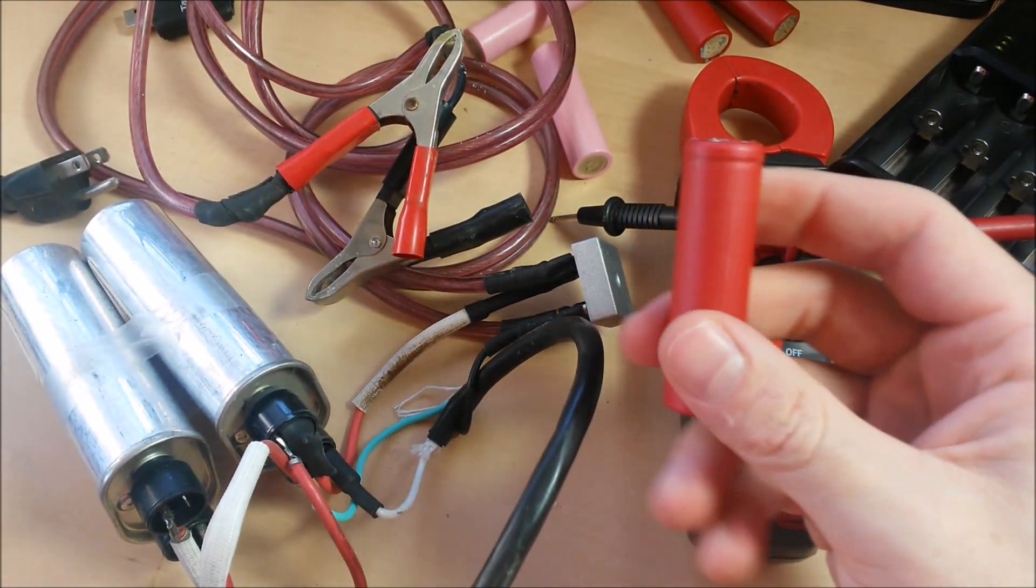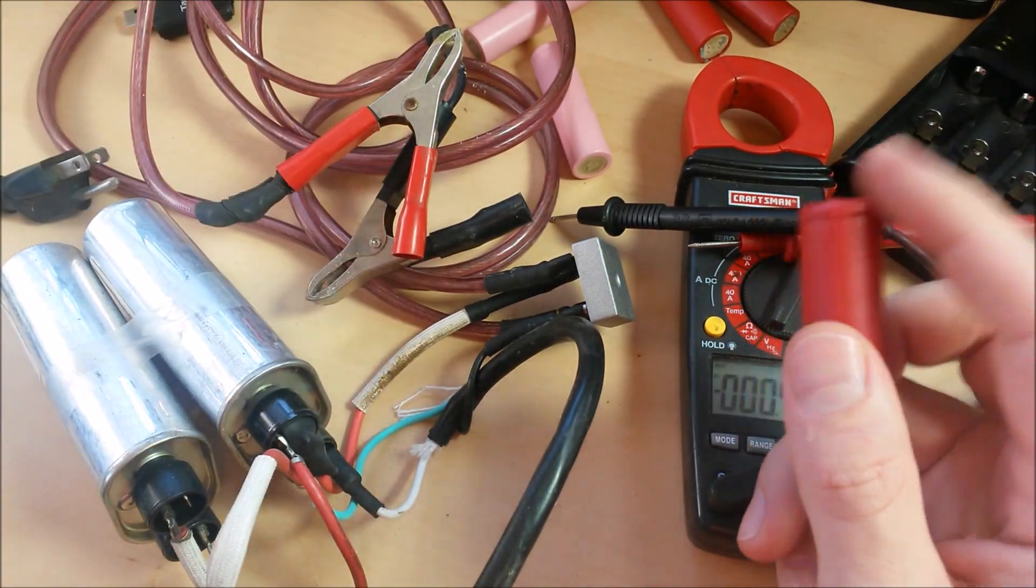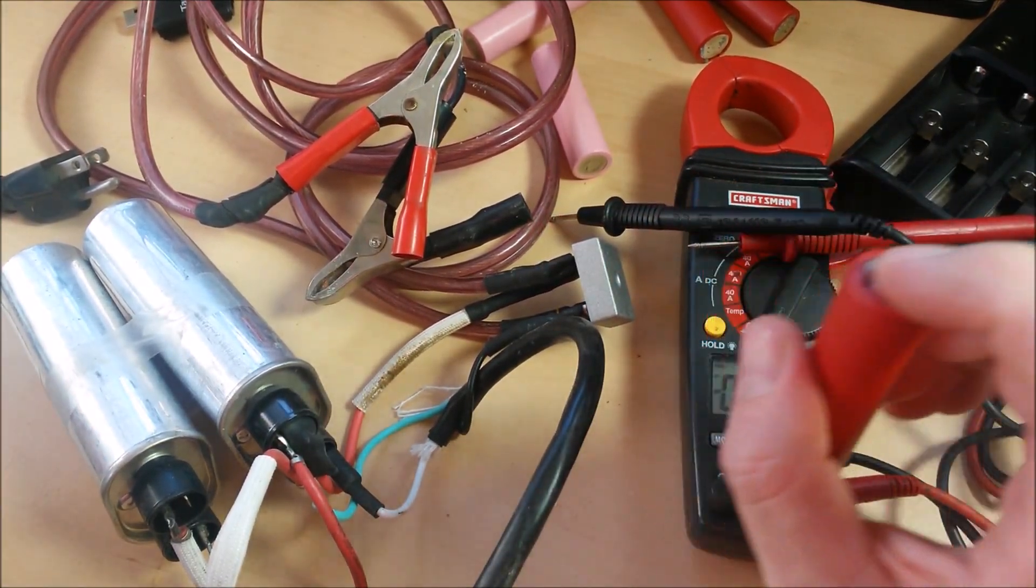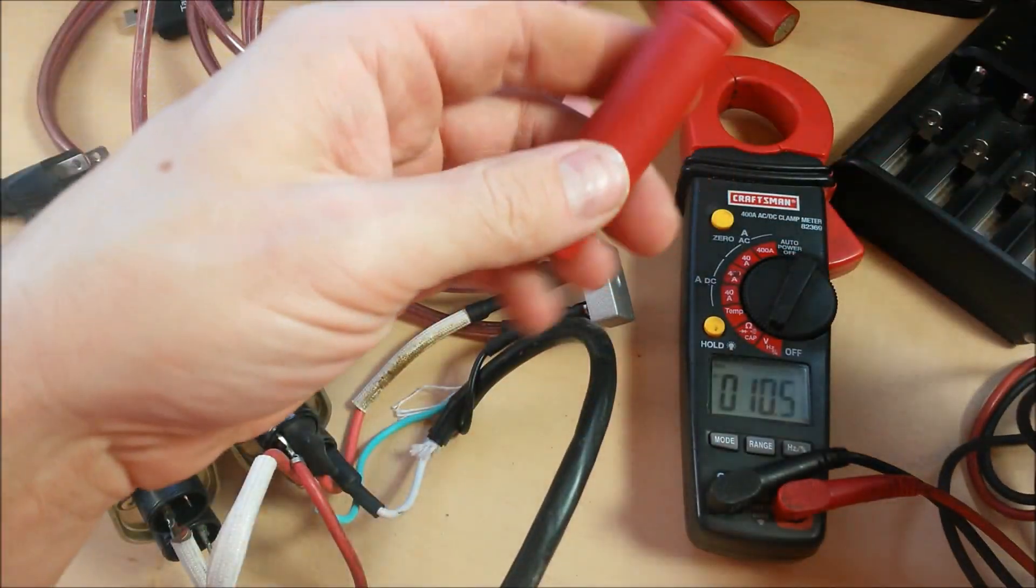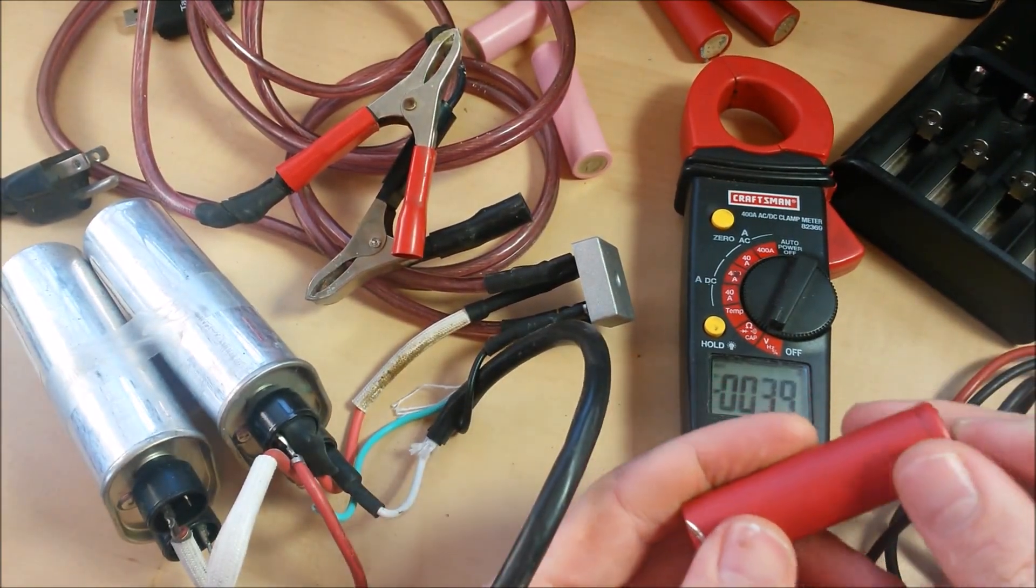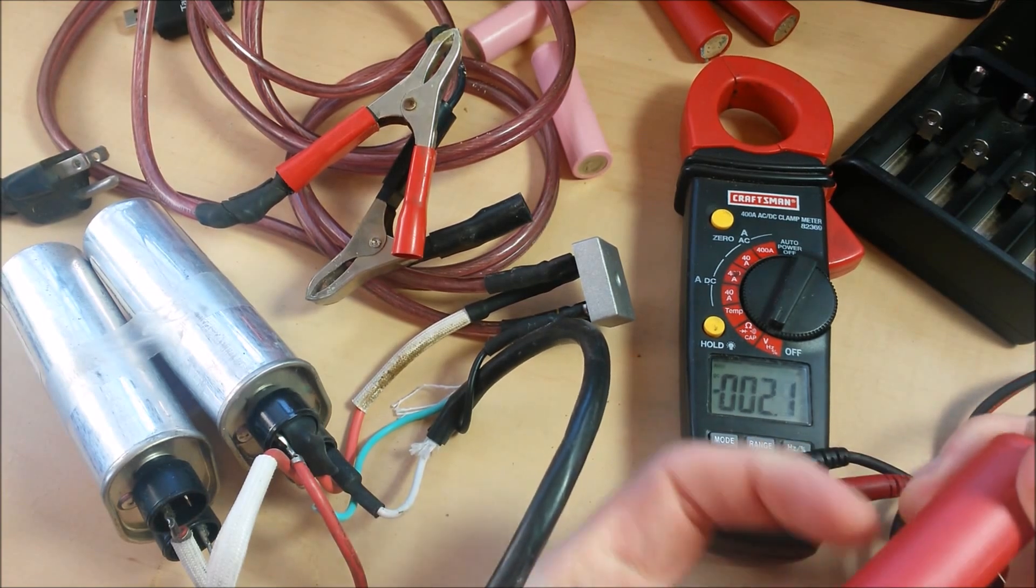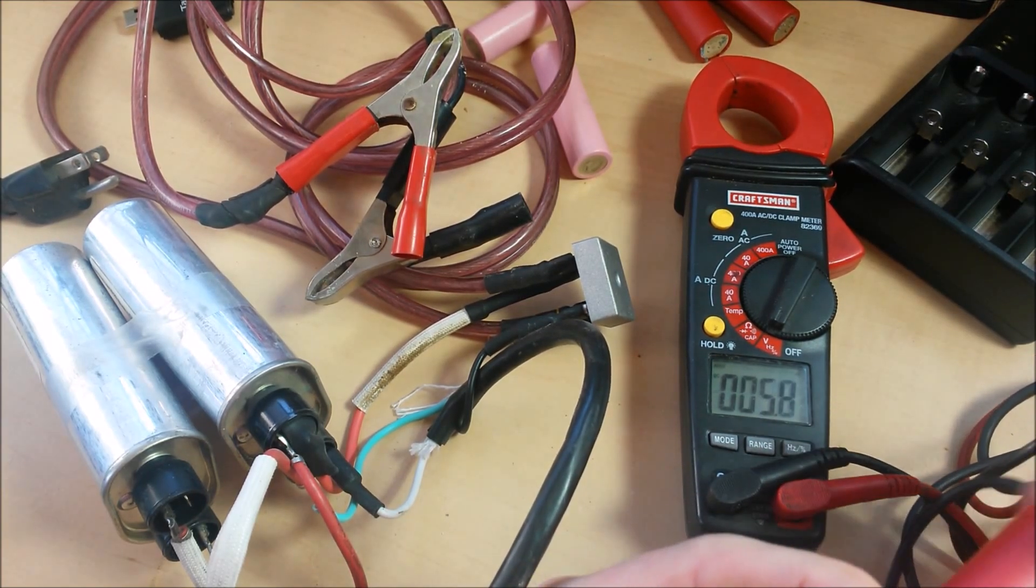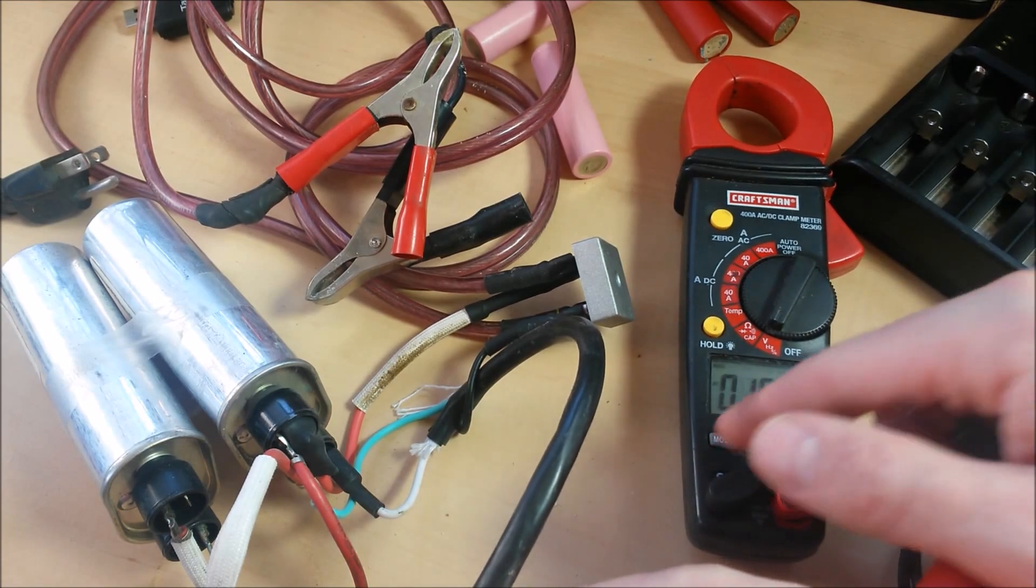If you've got a bad 18650, just use my links. I'll put some links to some good Panasonic cells on eBay and Amazon. So just to show you, we've got no love here. Throw it on the multimeter. No voltage. No voltage at all.